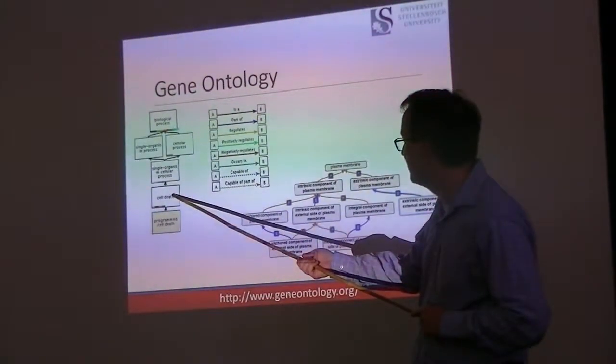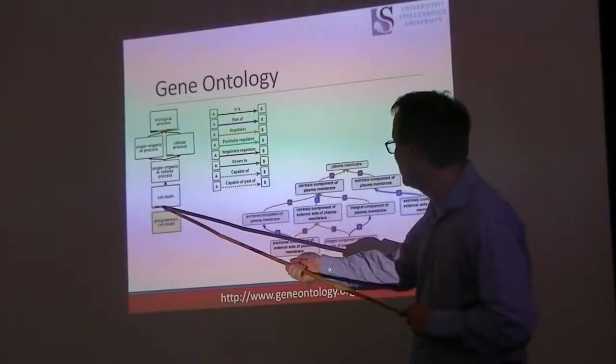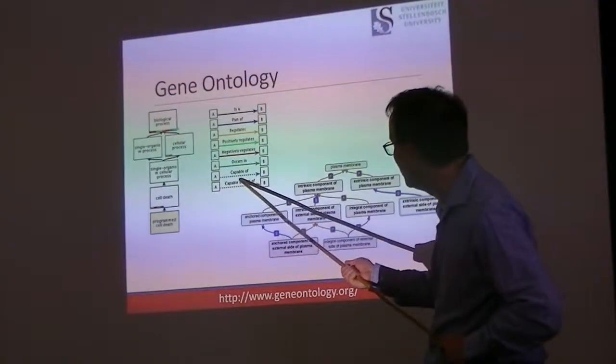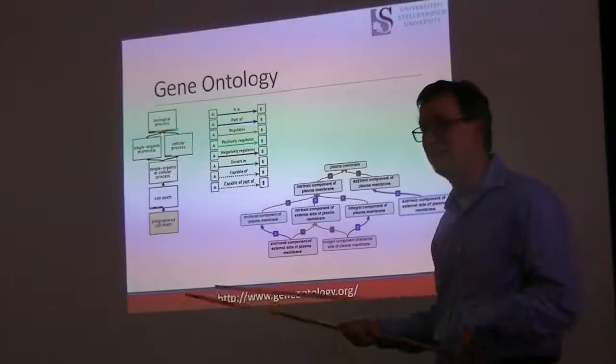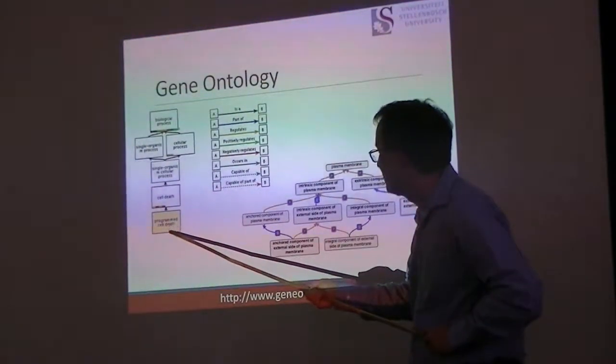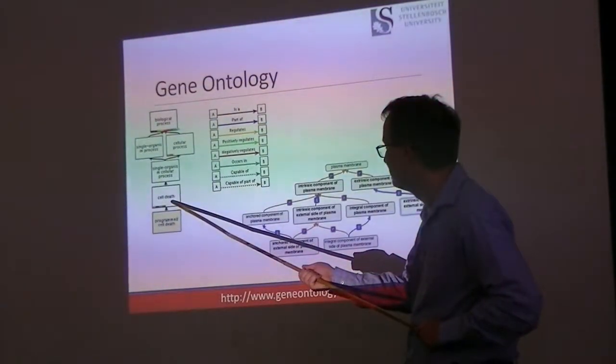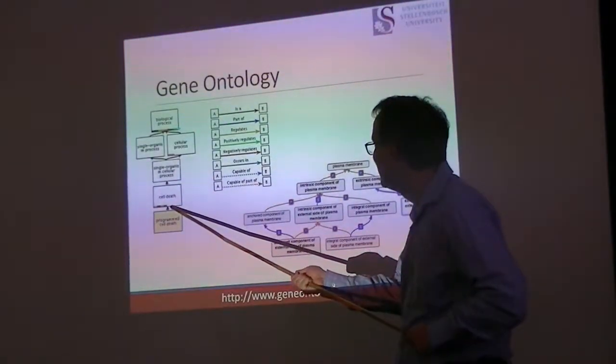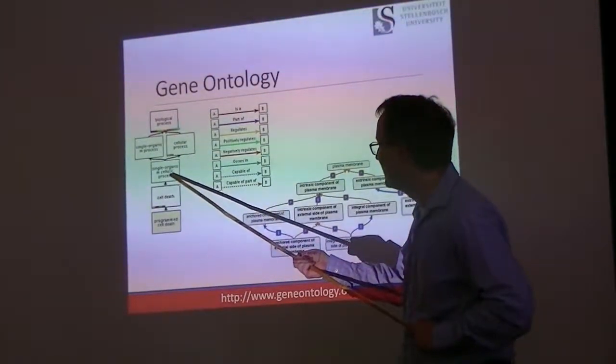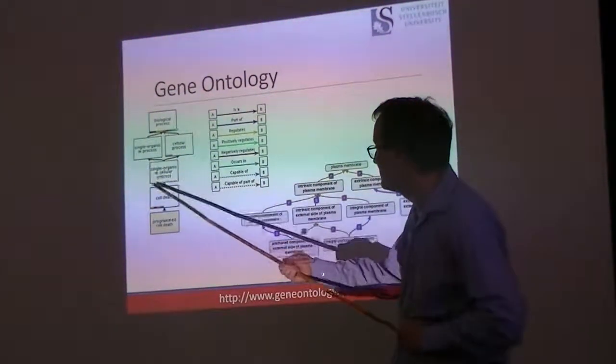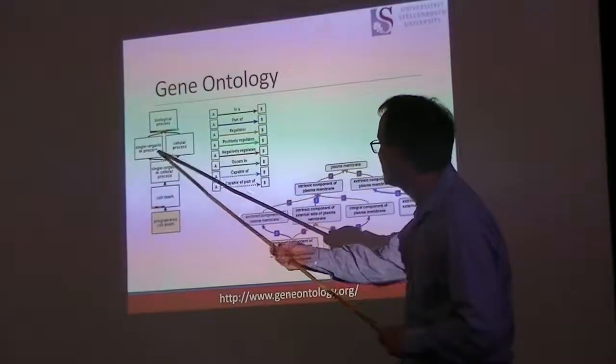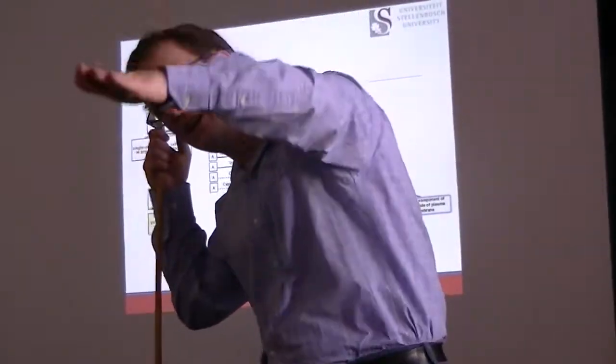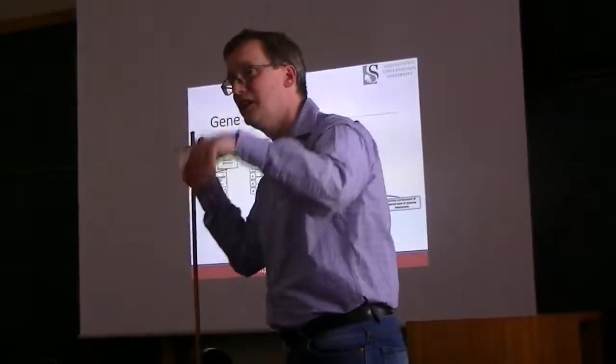Apoptosis, programmed cell death, is a type of cell death. You see that there are different relationships that hang in here. We've got is a part of, regulates, positively regulates, negatively regulates, occurs in, capable of, part of. Lots of different relationships there. Programmed cell death is a type of cell death. Chaotic cell death is also possible, not just the programmed type. This is a single organism cellular process, which is associated with both single organism process and with cellular process. Together, those are biological processes.